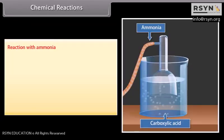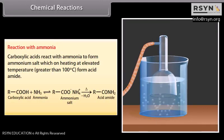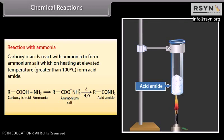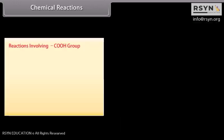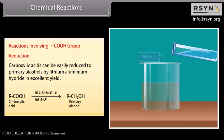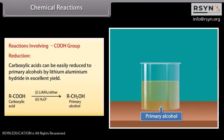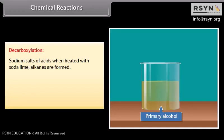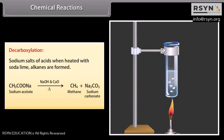Reaction with ammonia: carboxylic acids react with ammonia to form ammonium salt, which on heating at elevated temperature (greater than 100°C) forms an amide. Reduction: carboxylic acids can be easily reduced to primary alcohols by lithium aluminium hydride in excellent yield. Decarboxylation: sodium salts of acids when heated with soda lime form alkanes. When sodium acetate is heated with sodium hydroxide and calcium oxide, it forms methane and sodium carbonate.